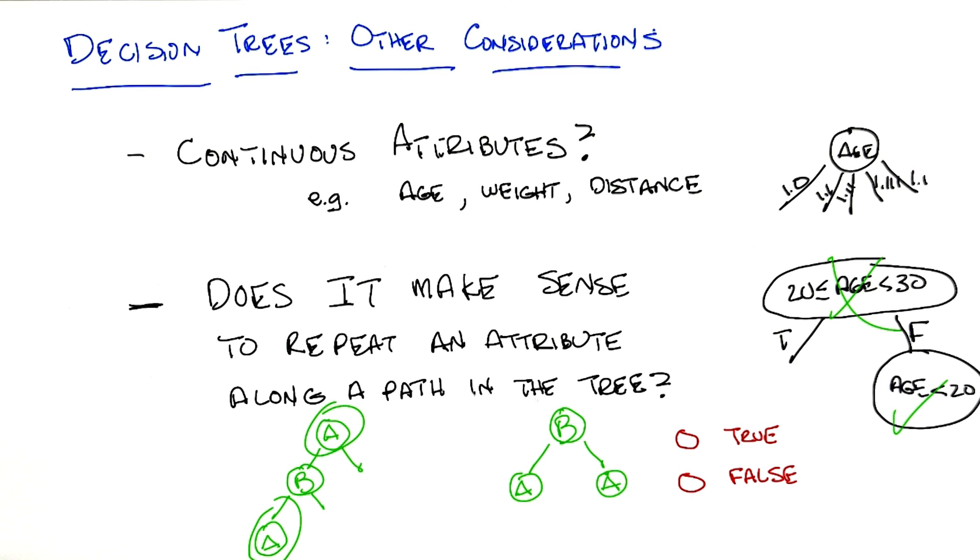Because what you're actually doing is asking a different question. So one way to think about this is that the question, is age in the 20s or not, is actually a discrete valued attribute that you've just created for the purposes of the decision tree. So asking that question again doesn't make sense, but asking a different question about age does in fact make sense.